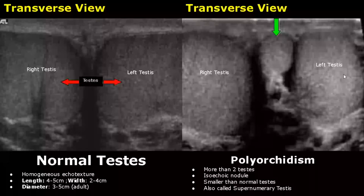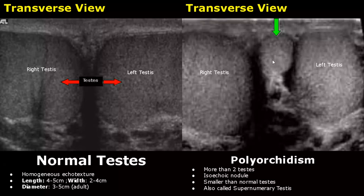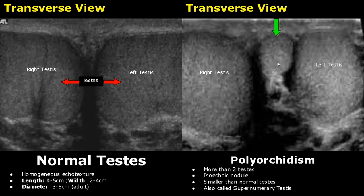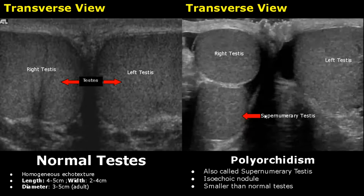In polyorchidism there is an extra testes which is isoechoic to normal testes. It will be smaller in size and is also called a supernumerary testes. Here is another image showing the extra testes behind the right testes.